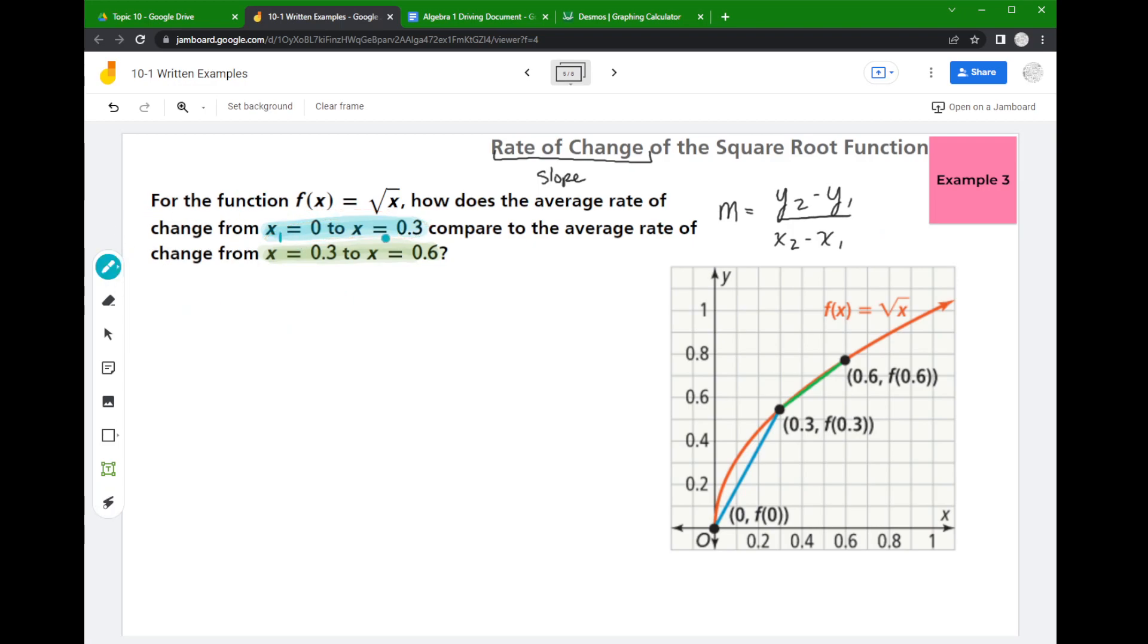Now the slope formula is right here. We say that the slope is equal to the change in our y values divided by the change in our x values. So if I look at the values that they give me, they're telling me what my x1 and my x2 values are. Now remember, to go from having your x values to having your y values, all that you do is plug them into the function.